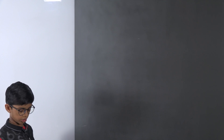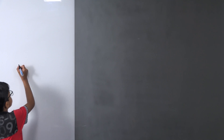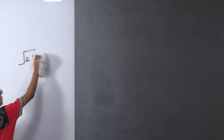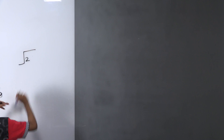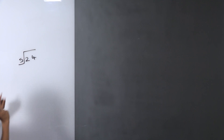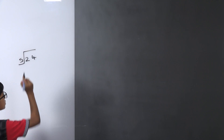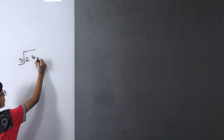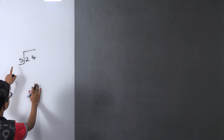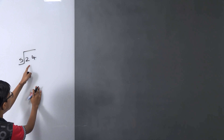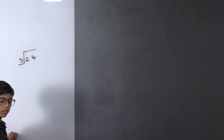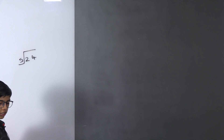An example of a terminating decimal is 24 divided by 5. The number being divided is called the dividend, the number we divide by is called the divisor, the answer is called the quotient, and what remains is called the remainder.